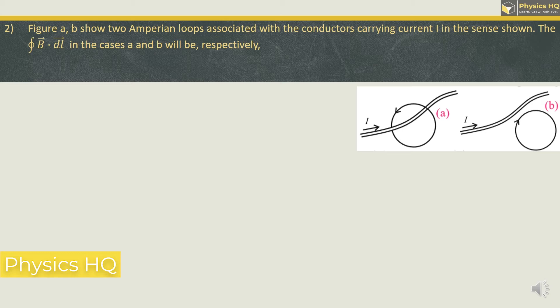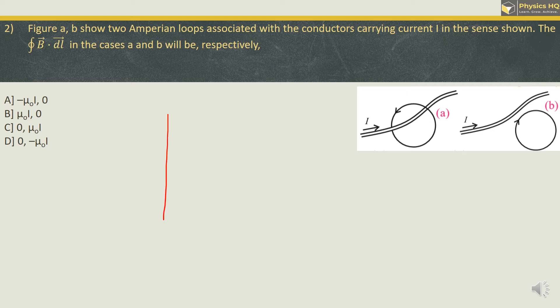Figure AB shows 2 Amperian loops associated with conductors carrying current I in the sense shown. The closed line integral of magnetic field B in cases A and B will be respectively. To understand Amperian loops, consider a conductor through which current I is flowing — a magnetic field is created around it. To understand the direction of current and magnetic field, we can use the right-hand thumb rule: if the fingers of the right hand curl in the direction of the magnetic field, the stretched thumb points in the direction of the current.